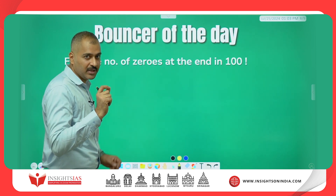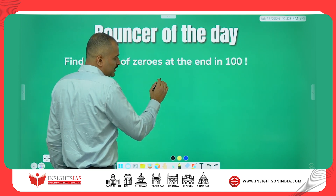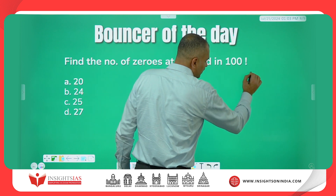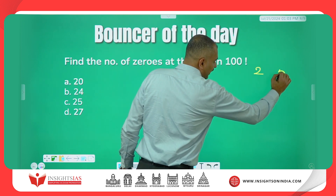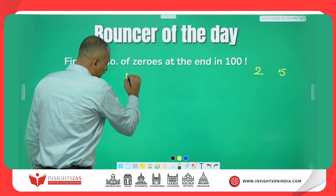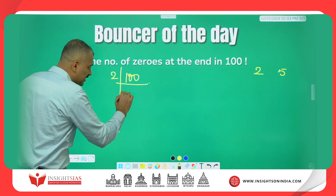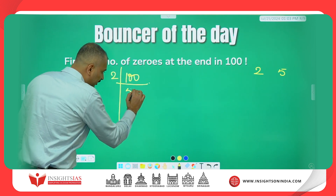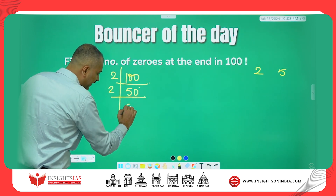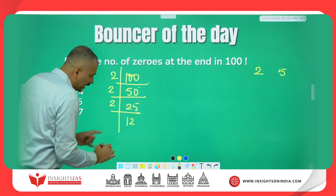This is a very simple question. Look here now. Number of zeros, as I explained in the last video, depends on the number of twos and number of fives. Divide this 100 by twos: this is 50 times, again divide by 2 gives 25 times, again divide by 2 gives 12 times.